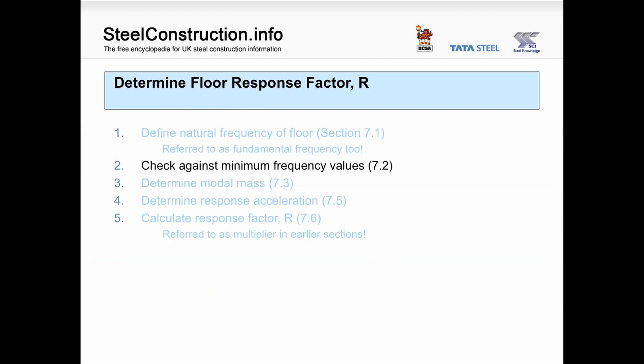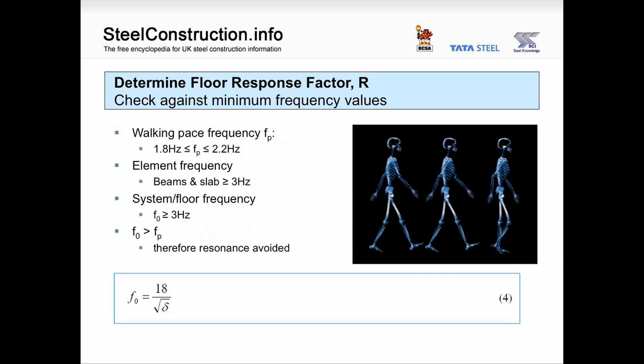We've now calculated the natural frequency of both the individual elements and the floor system, and we need to check these against the threshold value of 3 Hz. The frequency of each element must be greater than 3 Hz, and the frequency of the system as a whole must also be greater than 3 Hz.